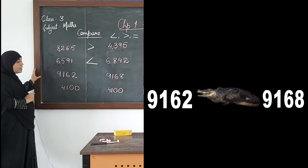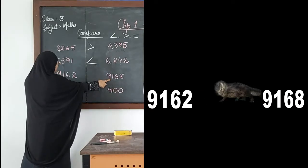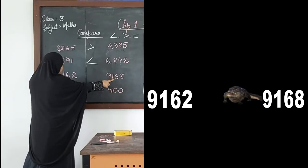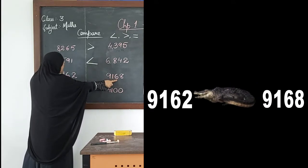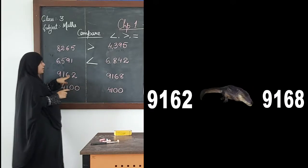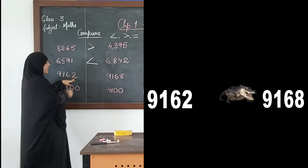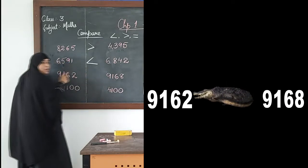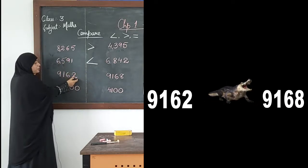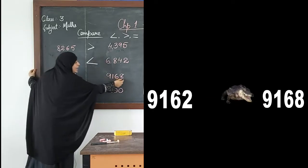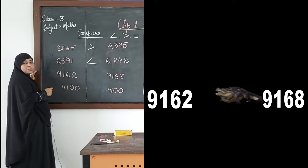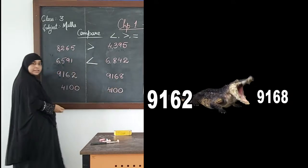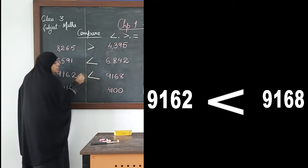For the next pair, we again start comparing from the thousands place: 9 and 9 — same. We move to hundreds: 1 and 1 — same again. Then tens: 6 and 6 — same. The last place is ones: 2 and 8. The first three digits were the same in both numbers, so we moved to the ones digits. 2 is small and 8 is big, so the first number is smaller and the second is greater. Again, the open mouth faces the greater number.